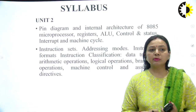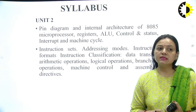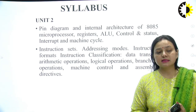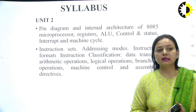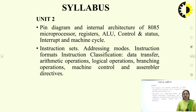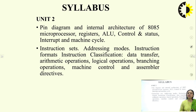Unit 2 talks about the basics of 8085. It covers the pin diagram and internal architecture of 8085 microprocessor, its registers, ALU, control and status signals, interrupt and machine cycle. The second part focuses on programming concepts: instruction sets, addressing modes, instruction formats, and all instruction sets classified into data transfer, arithmetic, logical, branching, machine control instructions, and assembler directives.